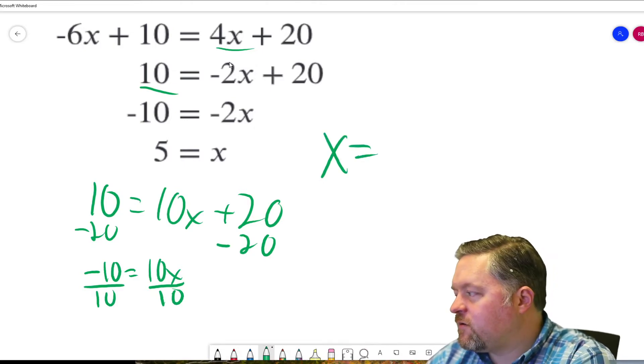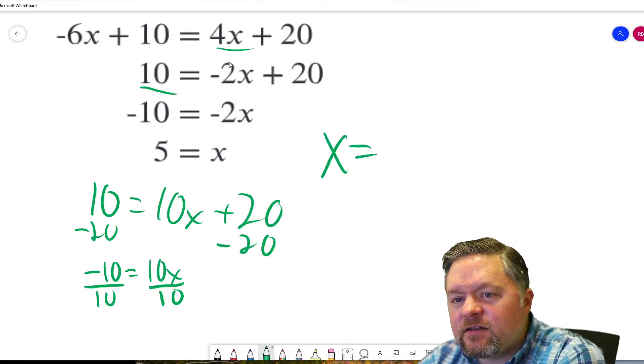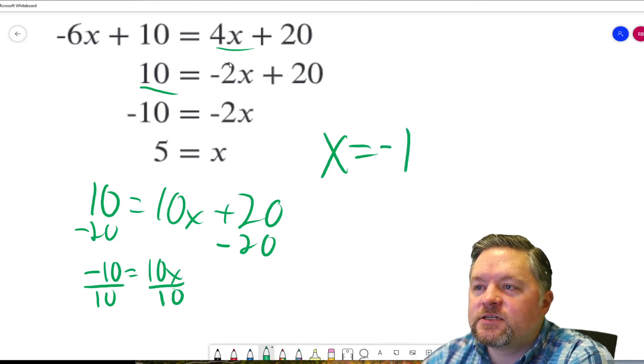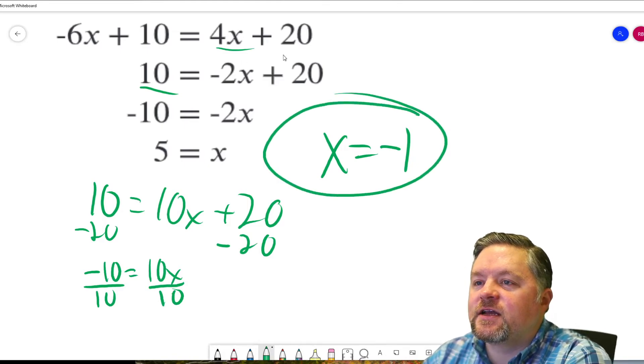X equals negative 10 divided by positive 10. 10 divided by 10 is 1. Negative divided by a positive is a negative. X equals negative 1.